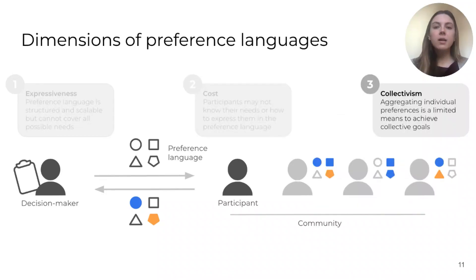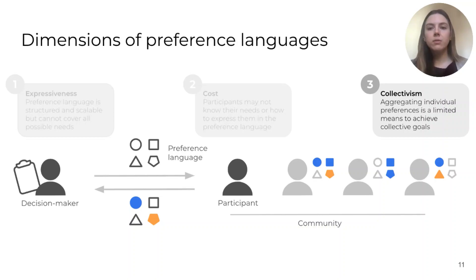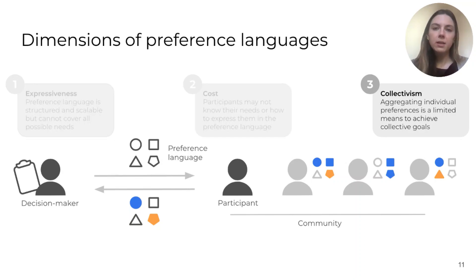The last dimension is collectivism. We use collectivism to refer to the extent to which the preference language can work towards community-level, rather than only individual-level goals. Many preference-based systems are focused on satisfying individual preferences, which we show is a limited means for achieving collective goals, like diversity and equity in the public school context.